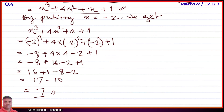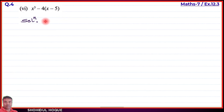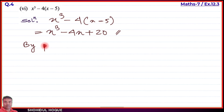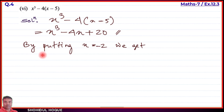Part number five solved, answer is 7. Part number six — the last part. The expression is x cube minus 4(x minus 5). Expanding the bracket: x cube as it is, minus 4 into x equals minus 4x, minus 4 into minus 5 equals plus 20. So simplified: x cube minus 4x plus 20.